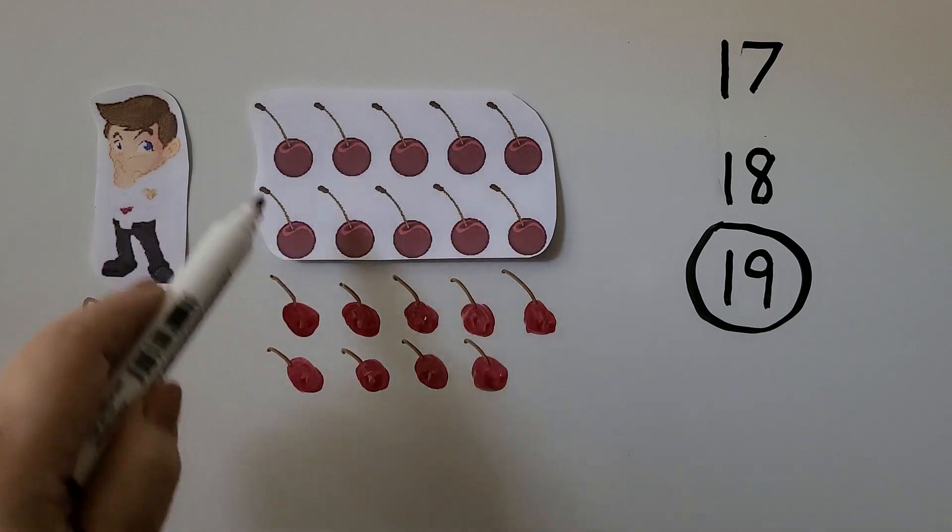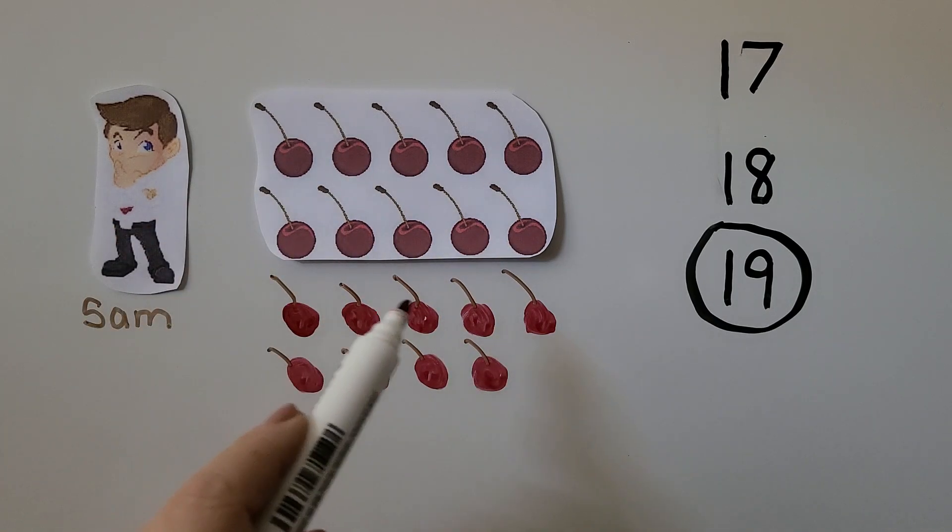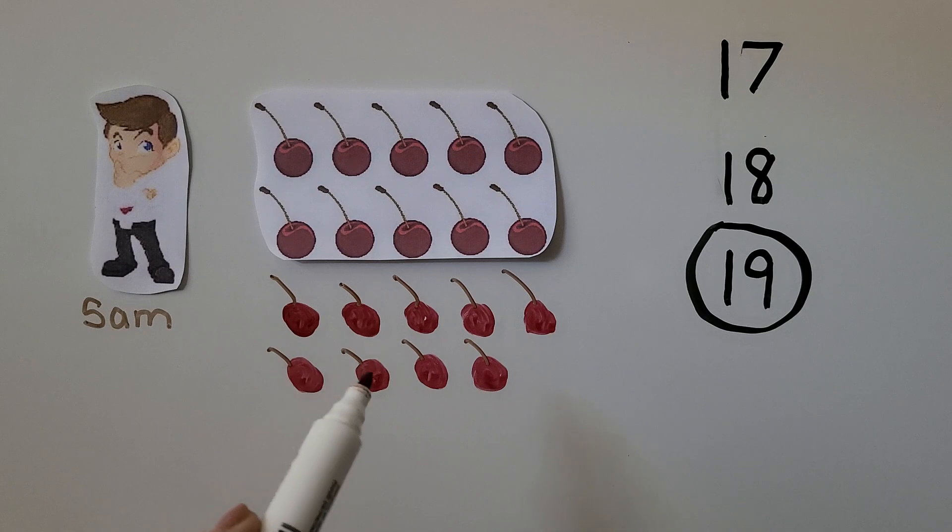We have 10, 11, 12, 13, 14, 15, 16, 17, 18, 19. We have 19 cherries. That's 1 more than 18.